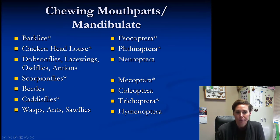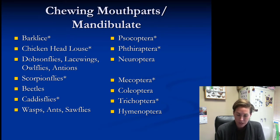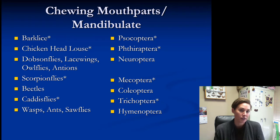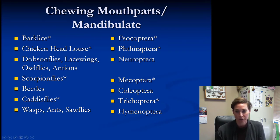A few more chewing mouthpart orders to remember — not required for juniors: bark lice (Psocoptera); the chicken head louse (Phthiraptera); dobsonflies, lacewings, owlflies, and antlions (Neuroptera); scorpionflies (Mecoptera); all beetles have chewing mouthparts as adults; caddisflies (Trichoptera); and wasps, ants, and sawflies (Hymenoptera).